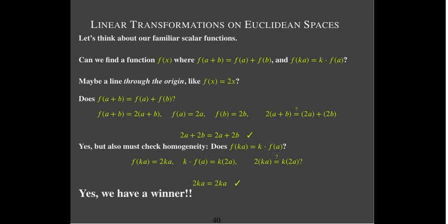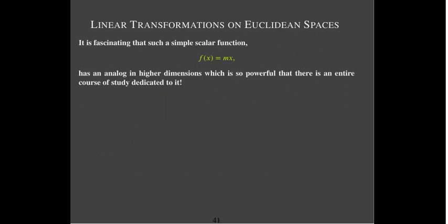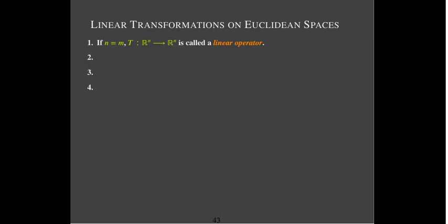In fact, when talking about scalar functions, the only type that are linear transformations have the form f(x)=mx. And even though that's a super simple function compared to all the others we discussed, when we move from scalars to vectors — inputs as vectors and outputs as vectors — these functions and their analogs are so important and so powerful that our entire course of study is dedicated to them. That's why we call it linear algebra: we have linear combinations and linear transformations.